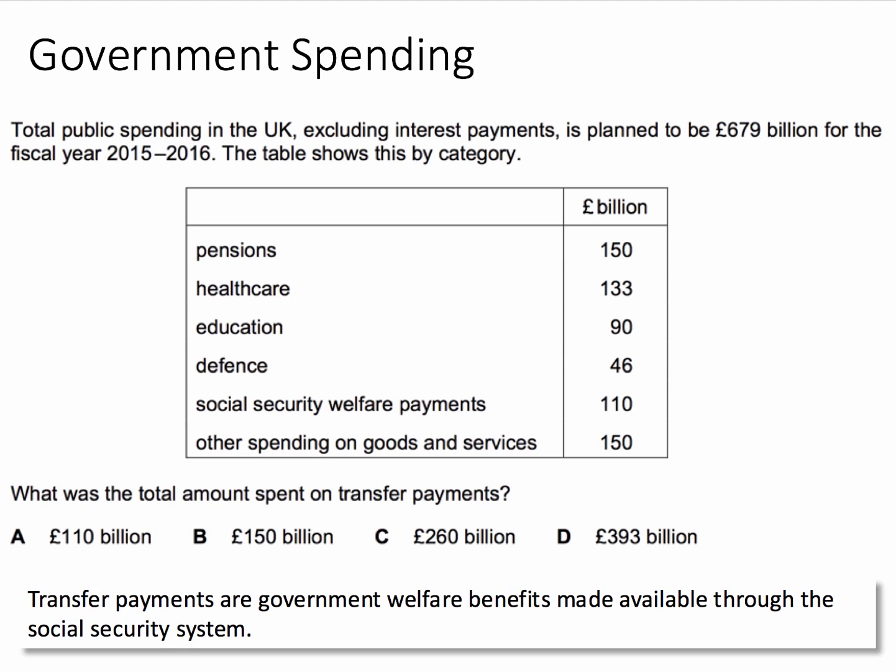So we're not looking for government spending on goods and services — we're looking for pure transfers. In the list, transfers are pensions and social security welfare payments. Those are the only two main transfers.